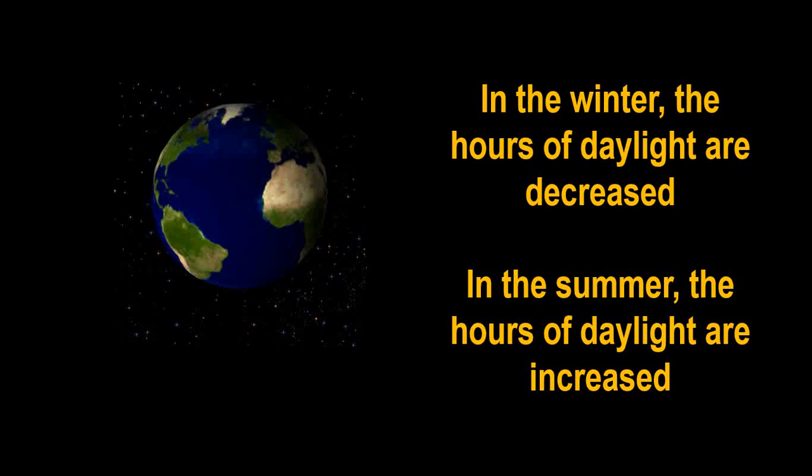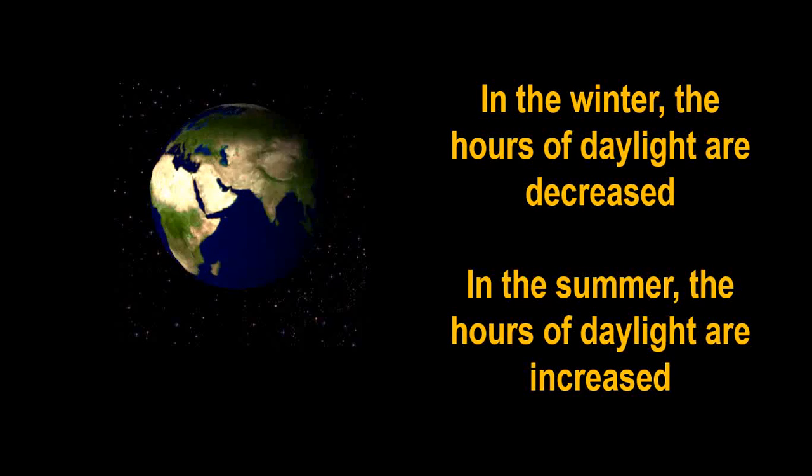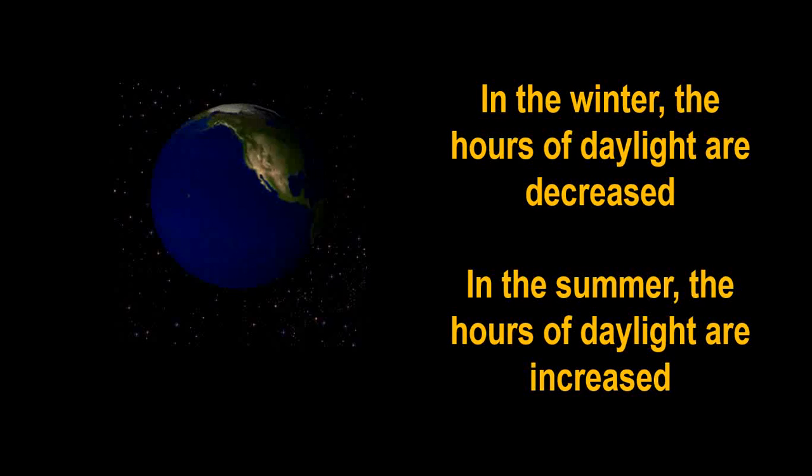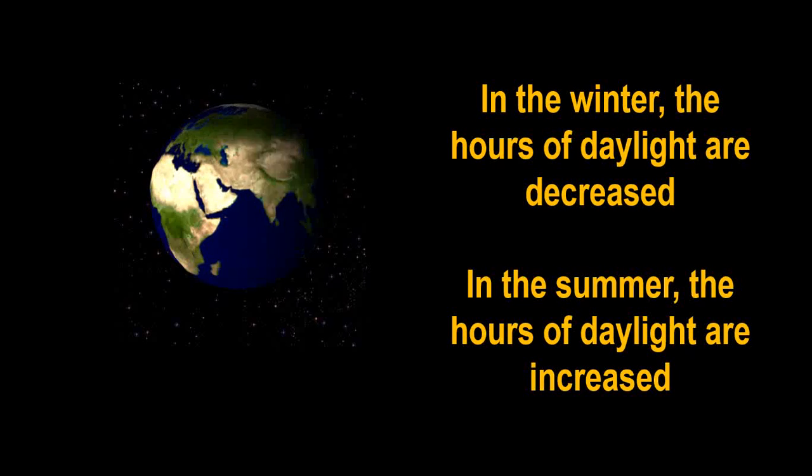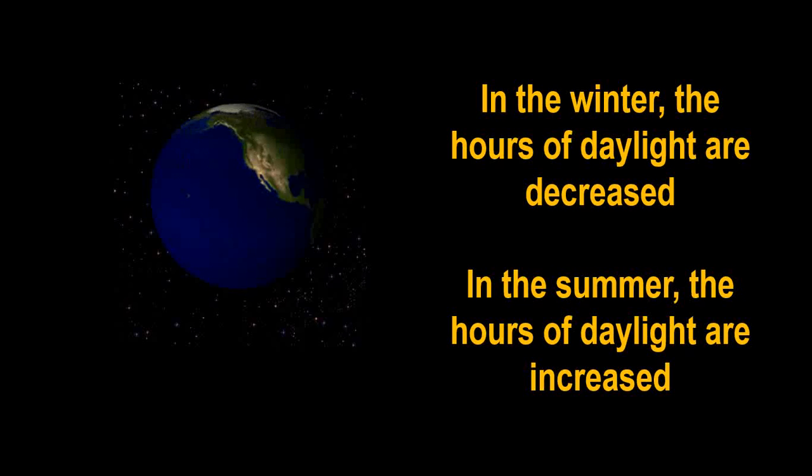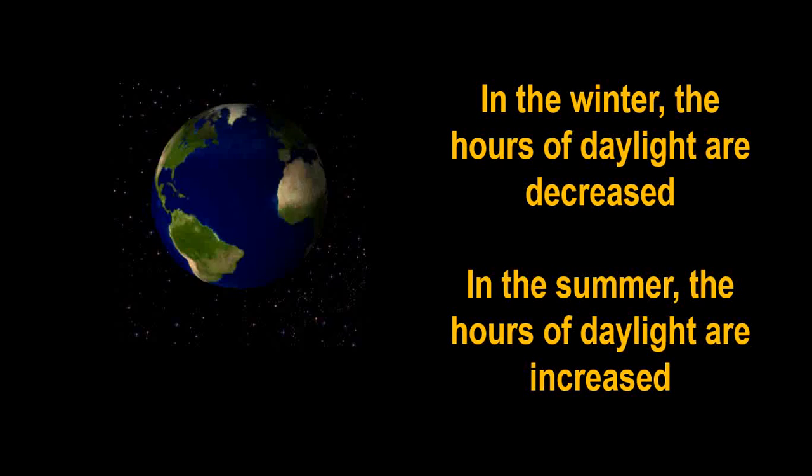In the winter, days are shorter. We have less hours of sunlight. That's why it's dark by 5 p.m. in the winter. In the summer, however, days are longer. We have more hours of daylight. That's why it gets dark around 8 p.m.